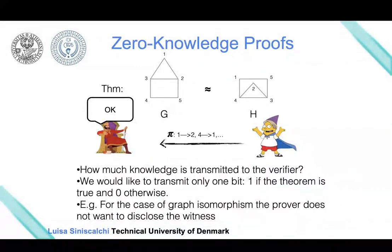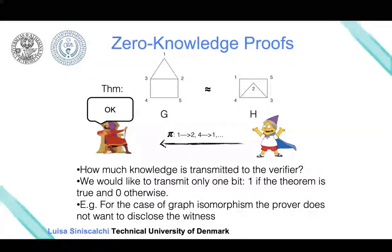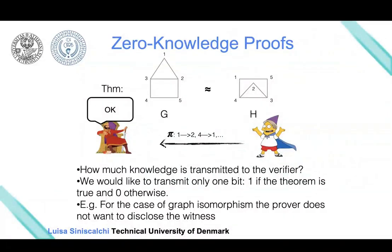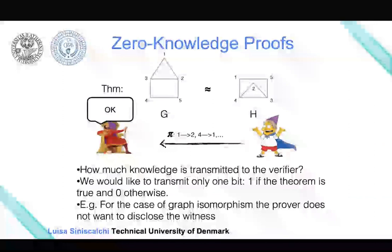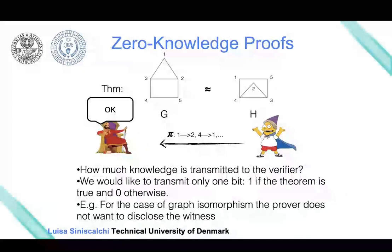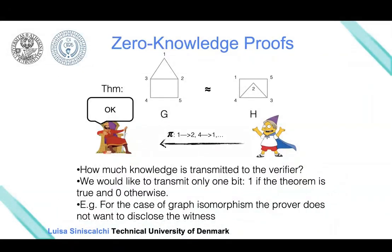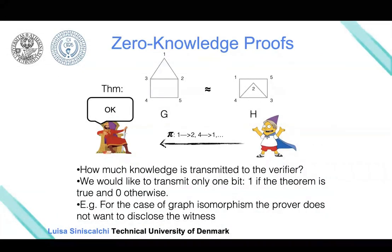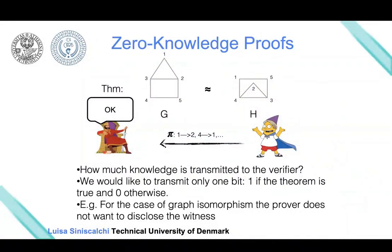The proof we were considering leaks more information than what the verifier is supposed to know. What we would like is that in the interaction between the prover and the verifier, the verifier knows the statement is true but no additional information is actually learned. We would like this proof to carry no knowledge—zero knowledge—about the certificate or witness for this theorem, which is the permutation in this case.